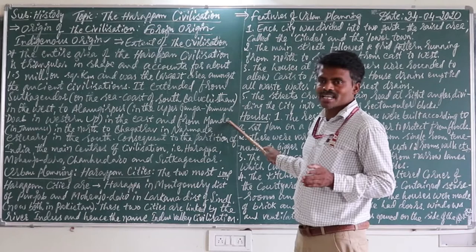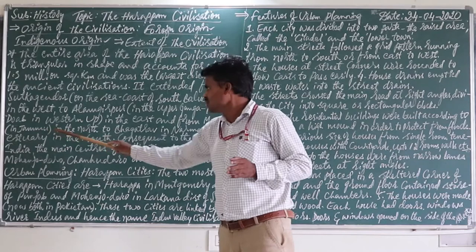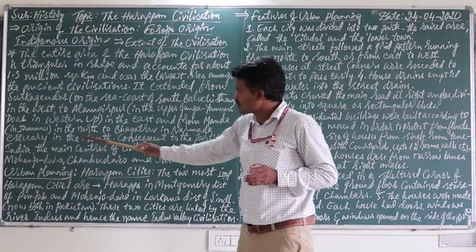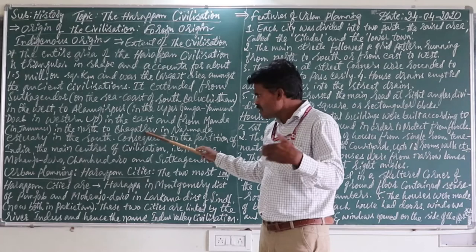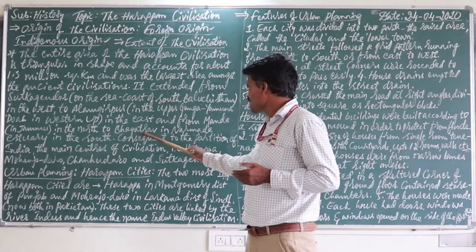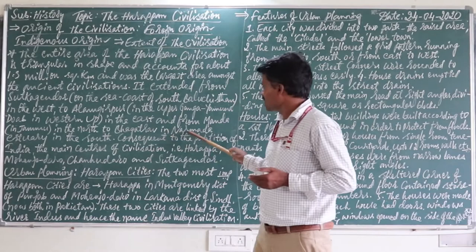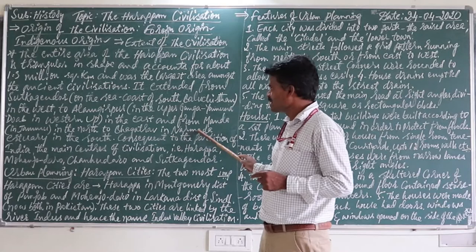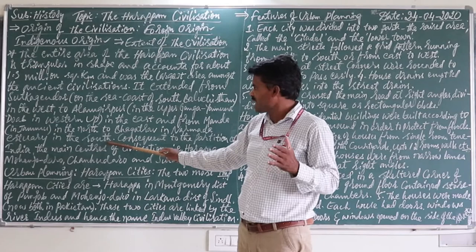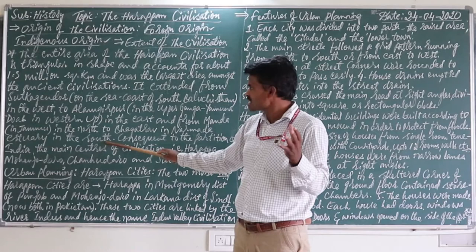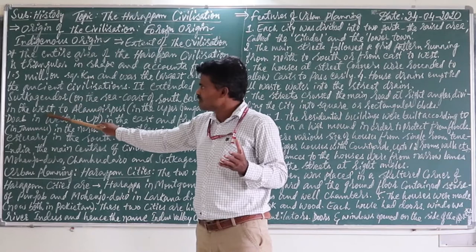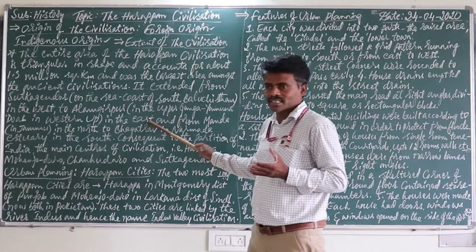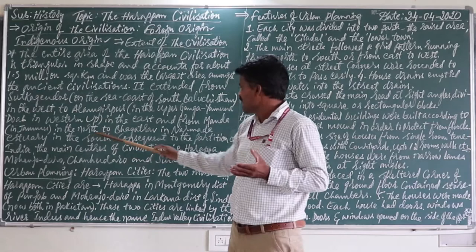From Manda in Jammu to the north, and Bhagathrao on the Narmada Estuary to the south. 'Estuary' means the mouth of the river — Narmada Estuary in the south. So now you understand all four directions: Sutkagendor in the west, upper Ganga-Yamuna Doab in the east in India, Manda in Jammu and Kashmir to the north, and Bhagathrao on the Narmada Estuary to the south.